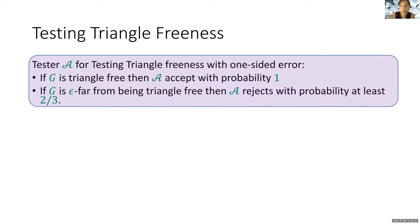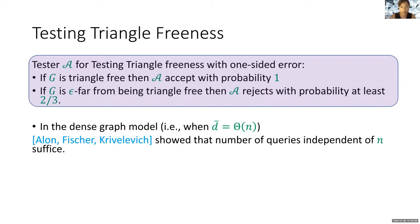A tester for the property of being triangle-free has a one-sided error. If given a graph which is triangle-free, the algorithm accepts with probability 1. And given a graph which is epsilon-far from being triangle-free, the algorithm rejects with probability at least two-thirds. Alon, Fischer, and Krivilevich showed that in the dense graph model, one can test triangle-freeness with query complexity which is independent of n, the number of vertices of the graph.